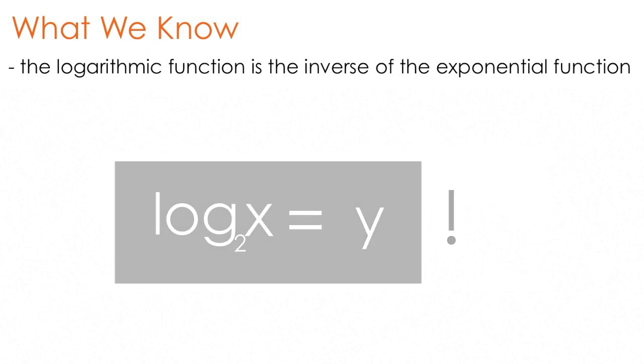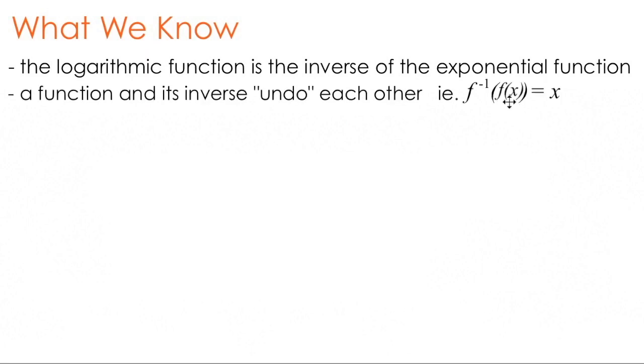We also know that taking a function and substituting it into its inverse will result in just x, or the argument of the function. A way we can summarize this is by saying that a function and its inverse undo each other when one is subbed into the other.